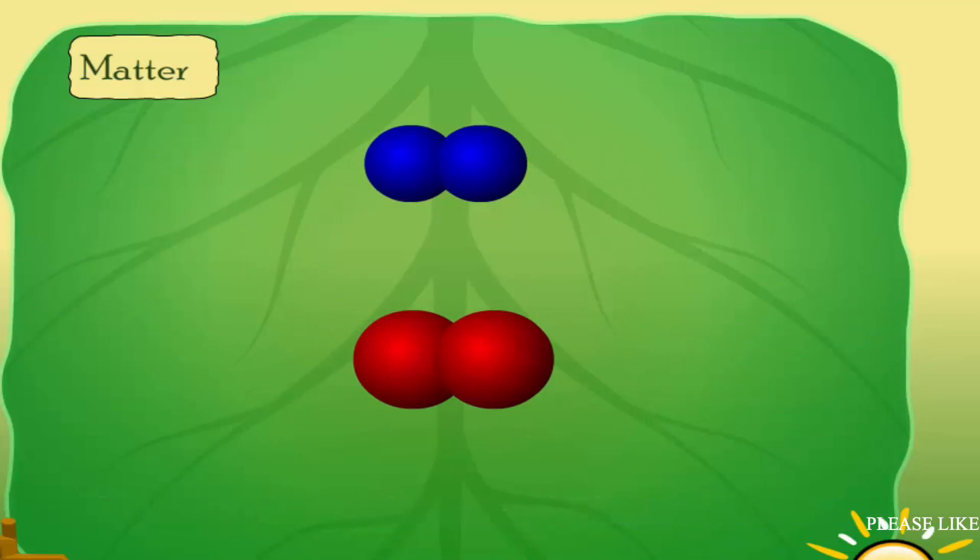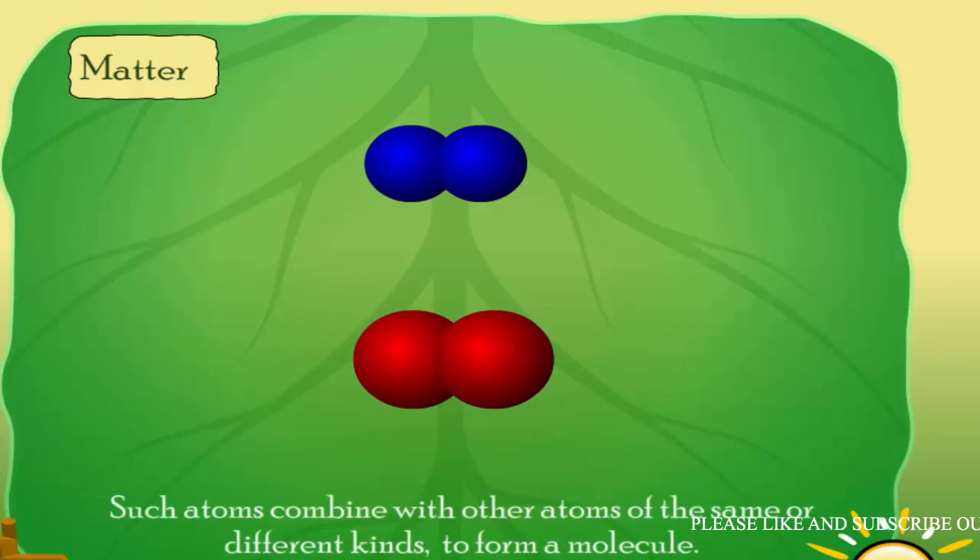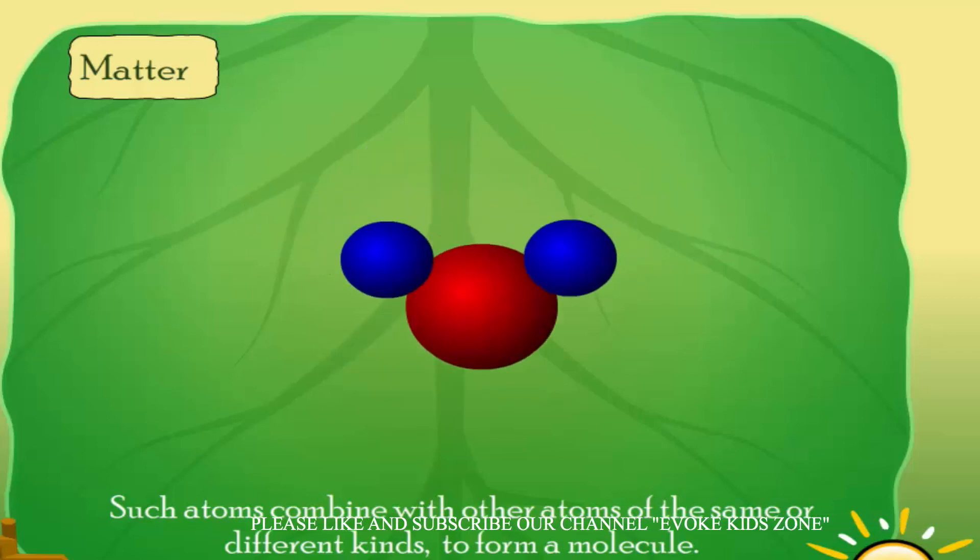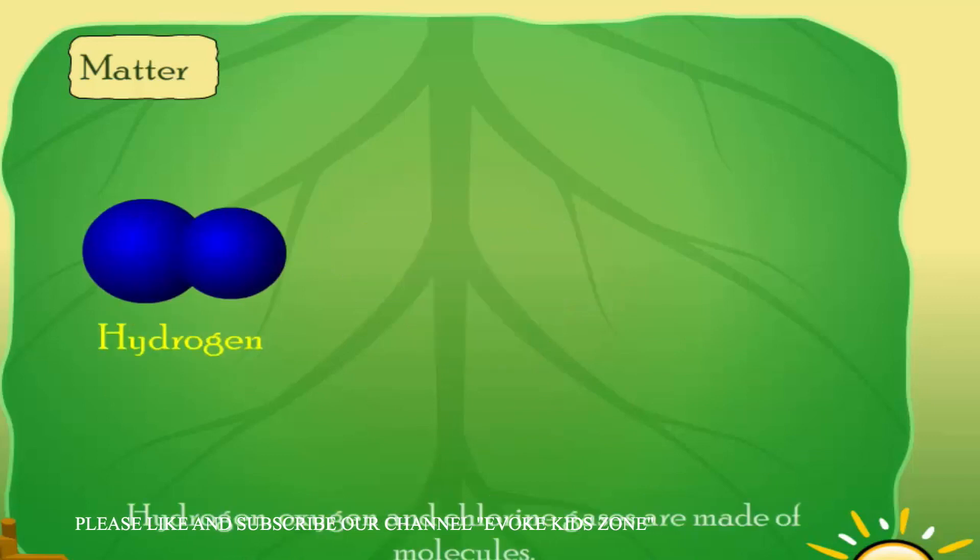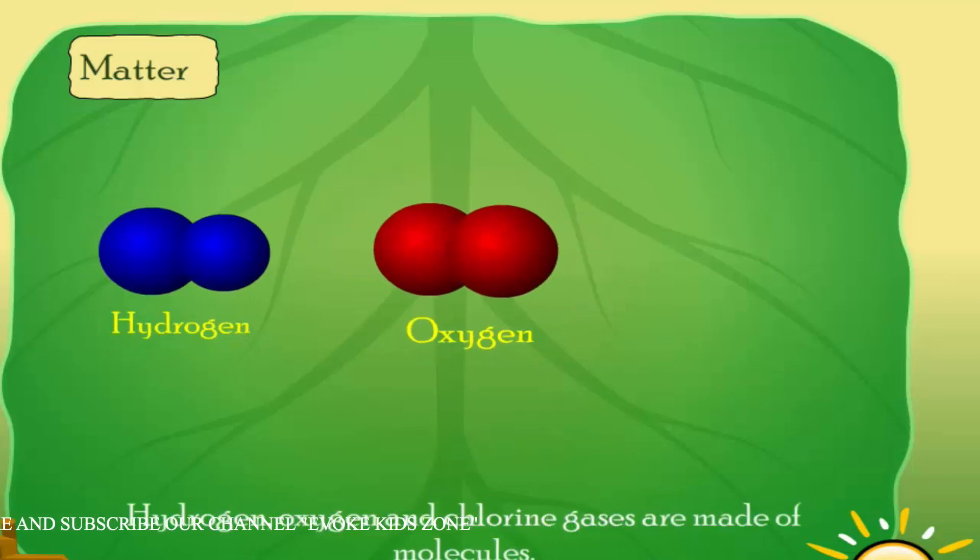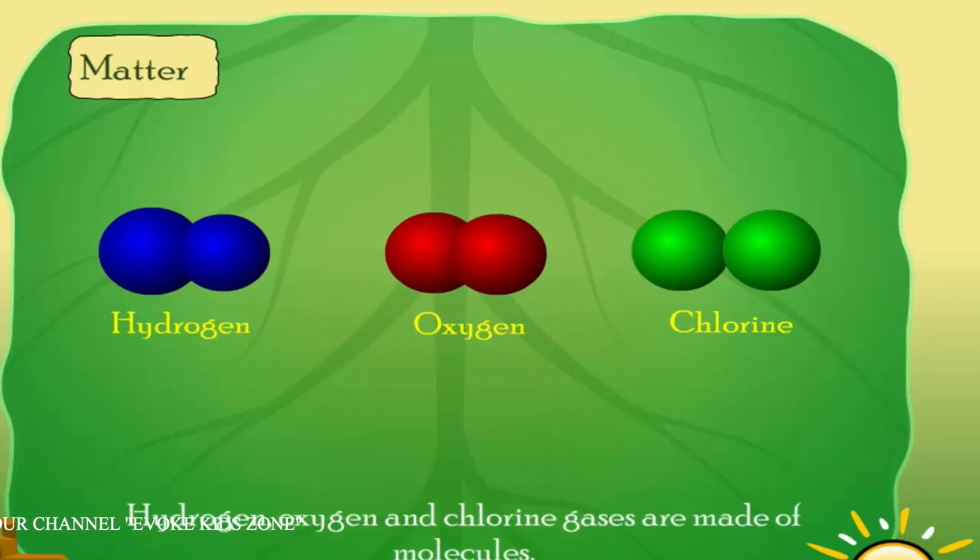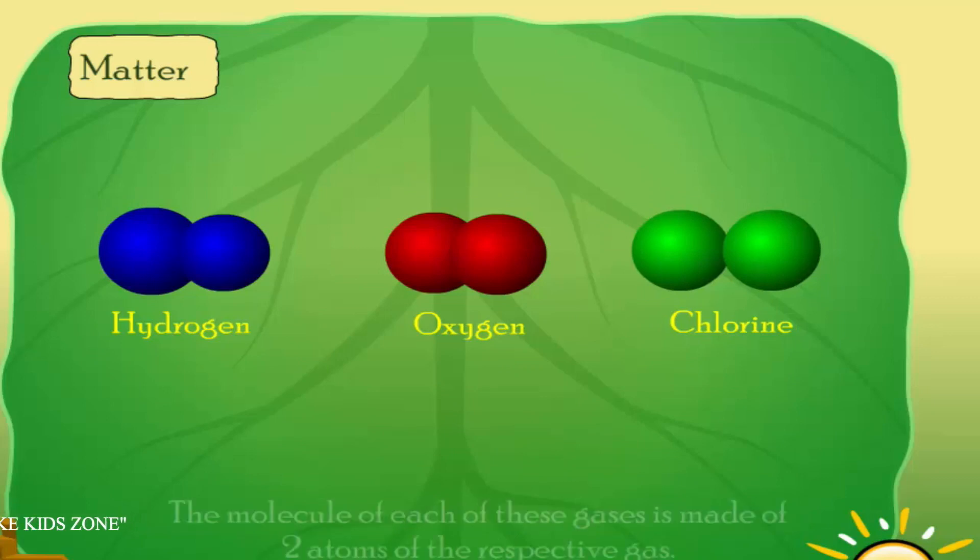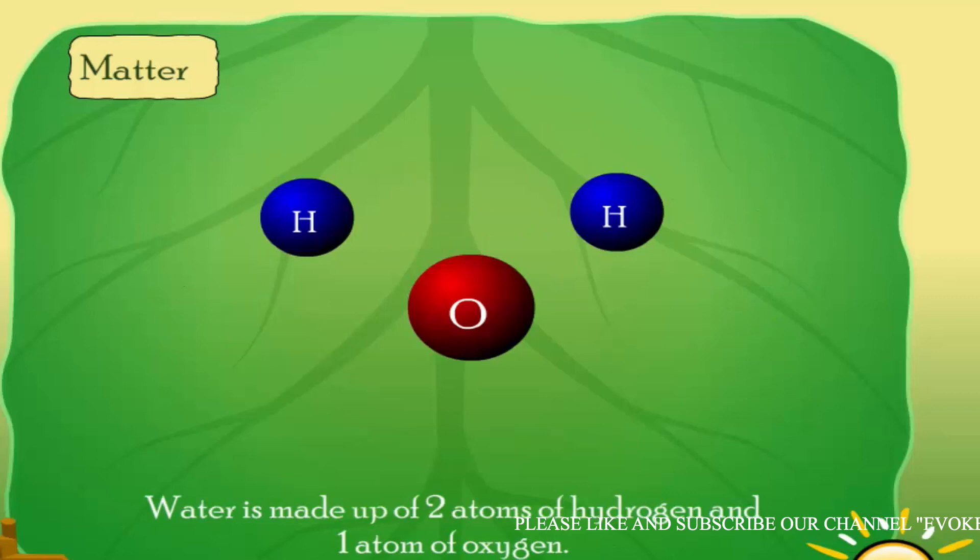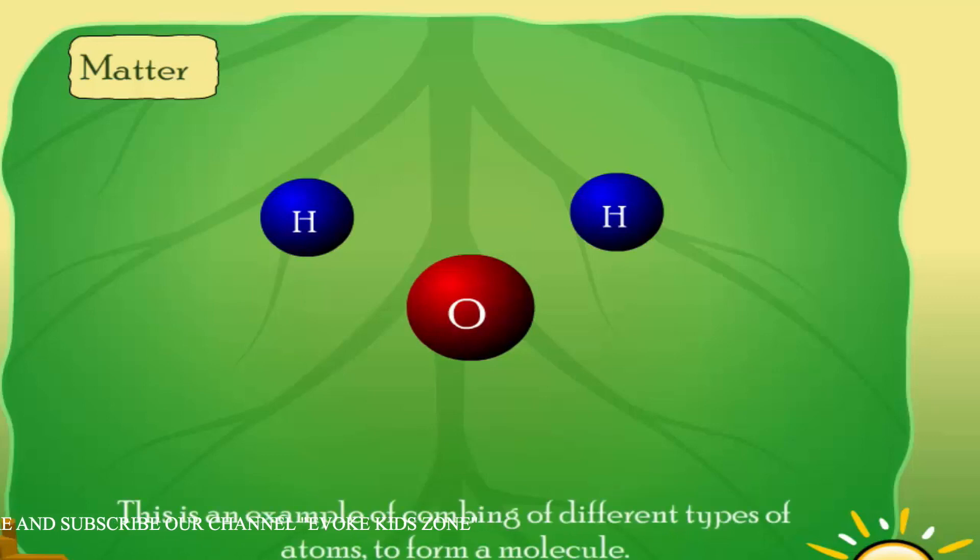Such atoms combine with other atoms of the same or different kinds to form a molecule. Hydrogen, oxygen, and chlorine gases are made of molecules. The molecule of each of these gases is made of two atoms of the respective gas. Water is made up of two atoms of hydrogen and one atom of oxygen.